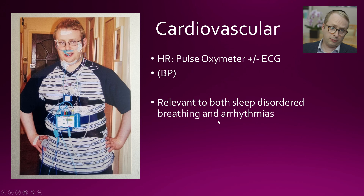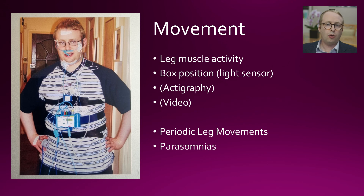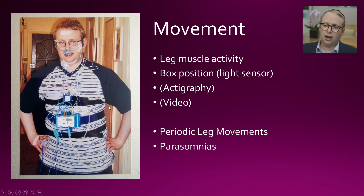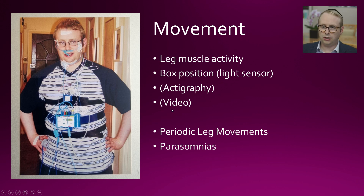In terms of movements, we have leg muscle activity detection via EMG, with a couple of leads going down to the legs. There's also an accelerometer in the box which looks at what position one is sleeping in — supine or on your side, for example. The box may also have a light sensor for when the lights are turned off, and there are options these days for actigraphy to record wrist movements, and of course video as well. These are all incredibly important for looking at periodic leg movements during sleep and the parasomnias — when things go bump in the middle of the night.